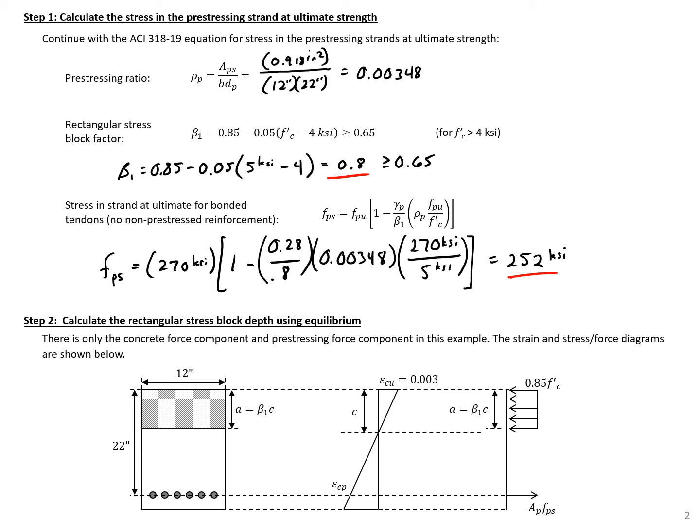With this value, we can calculate the rectangular stress block depth using equilibrium. We'll need our strain diagram and stress-force diagram. The neutral axis depth, or zero strain point, is C, and we assume a rectangular stress distribution in the concrete with depth A equal to beta 1 times C.